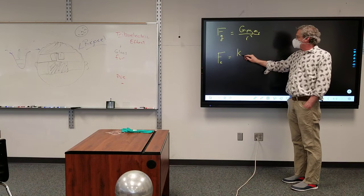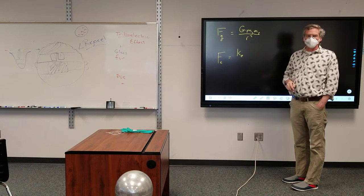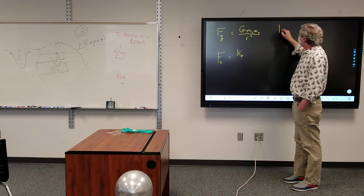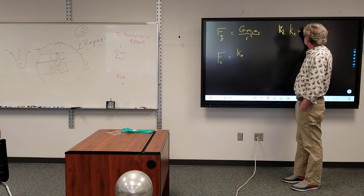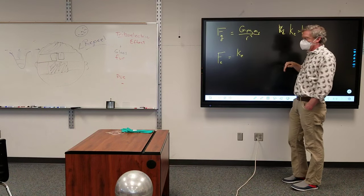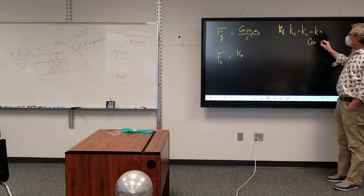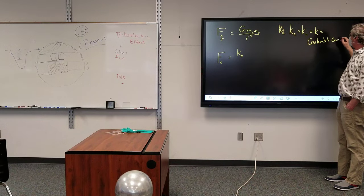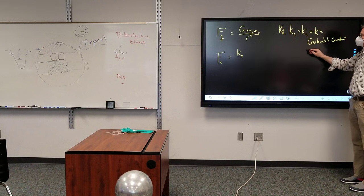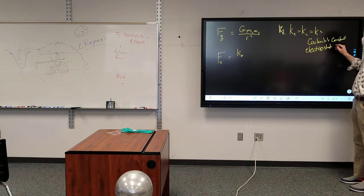This k right here. I sometimes write k sub e, sometimes I write k sub c, so k sub e, try that again, it's a lowercase k, k sub e, k sub c, or if I'm feeling really slack, I'll just write k. This is known as Coulomb's constant. Electrostatic constant. Or that too.